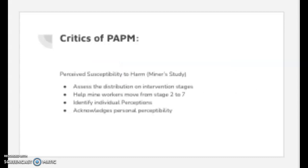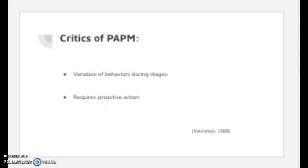Referring to the constructs of perceived susceptibility, the PMPM was able to assess the distribution of intervention stages and help mine workers move from stage 2 to stage 7 in acceptance of new preventive technology. The use of PMPM also evaluated the different perceptions of mine workers towards new technologies and the acknowledgement of individual perceptions. The PMPM stage theory suggests there is a variation of behavior when moving people from stage to stage, which can be a barrier to the transition process. Protection-related factors such as time, money, and skills required to implement this stage model usually interfere with an individual's decision to act protectively.